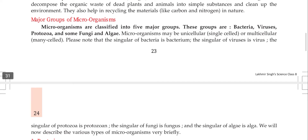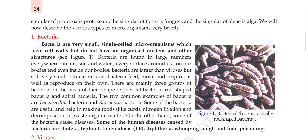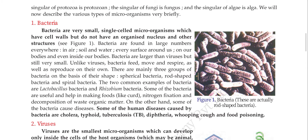Let's see what the main groups of microorganisms are. Microorganisms are classified into five major groups: bacteria, viruses, protozoa, fungi, and algae. We can divide microorganisms into these five subparts. Let's move ahead and discuss each individual part.